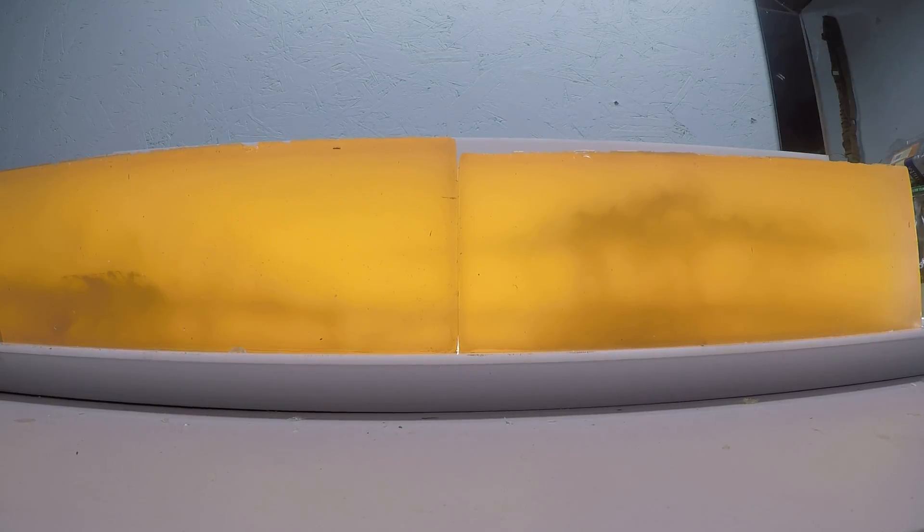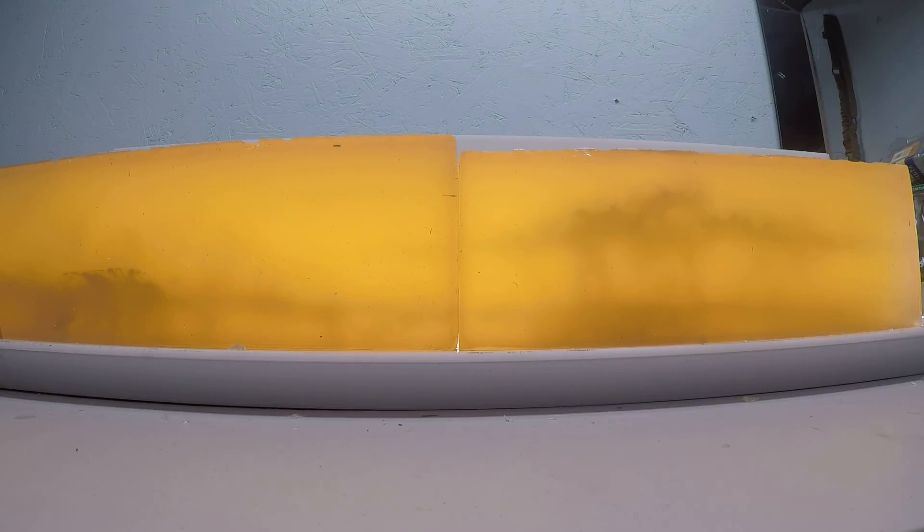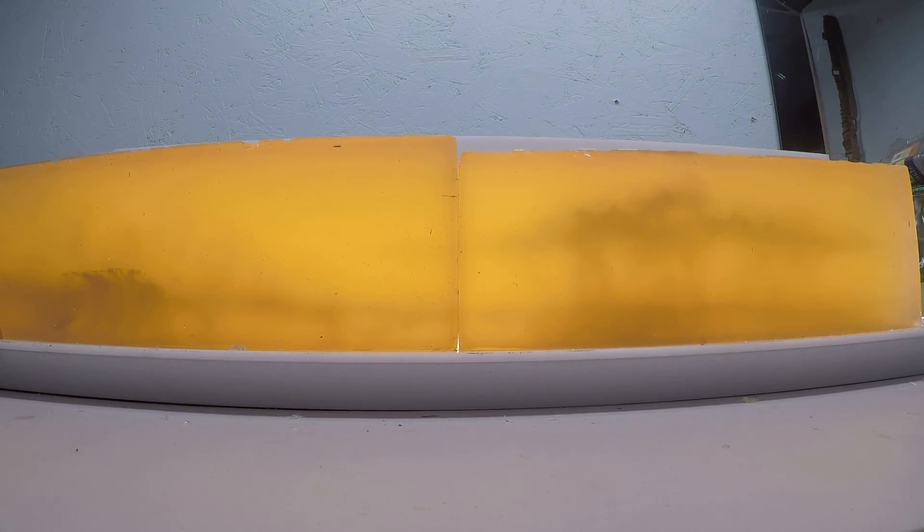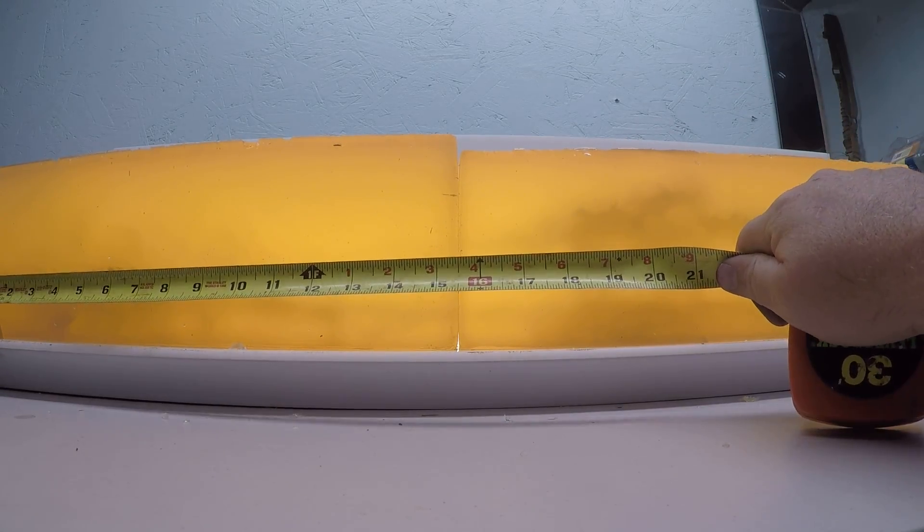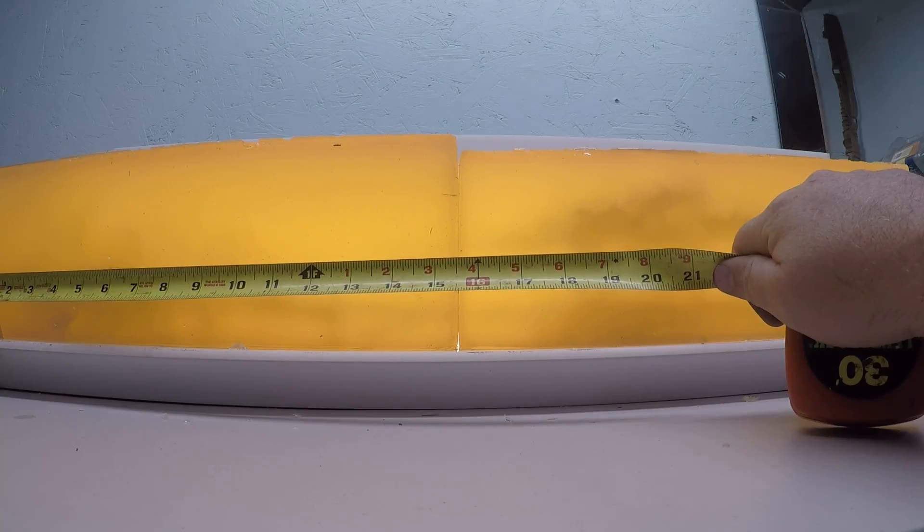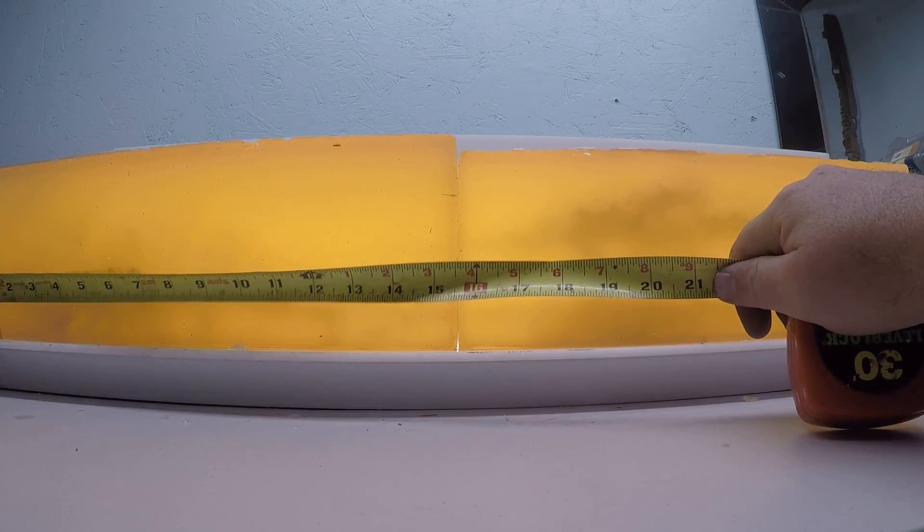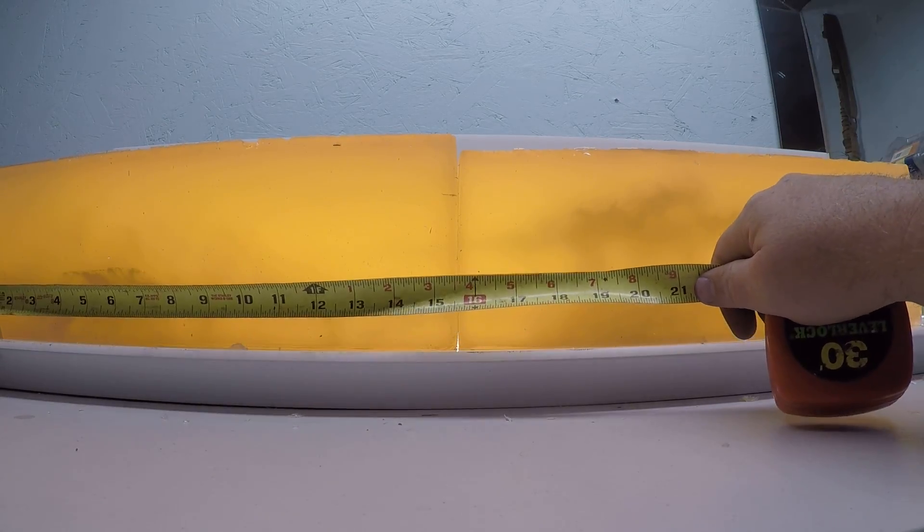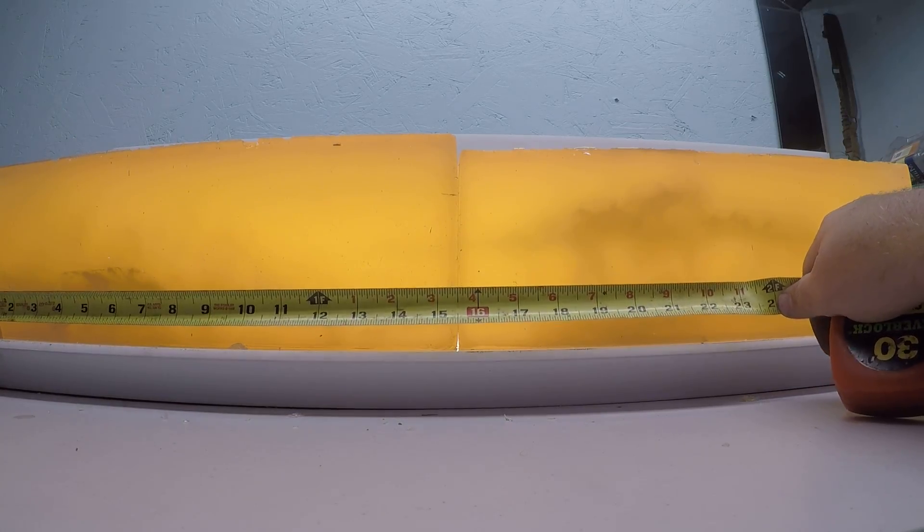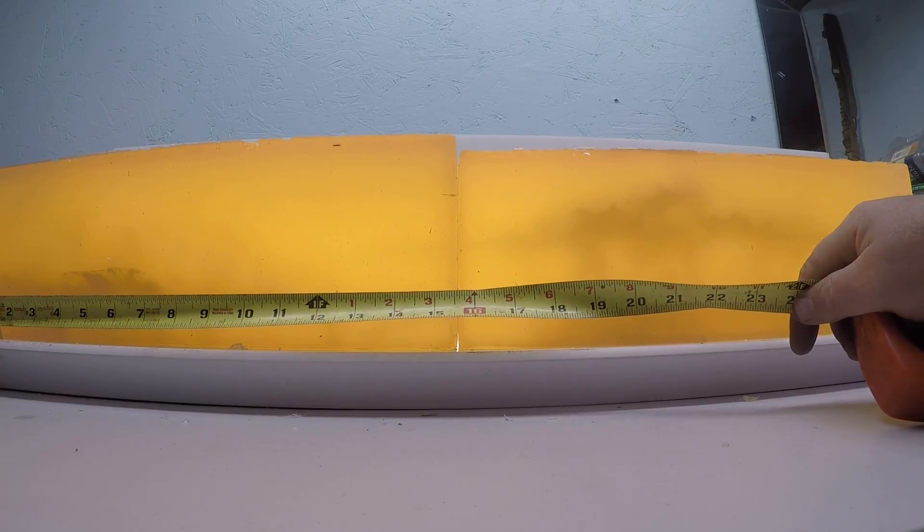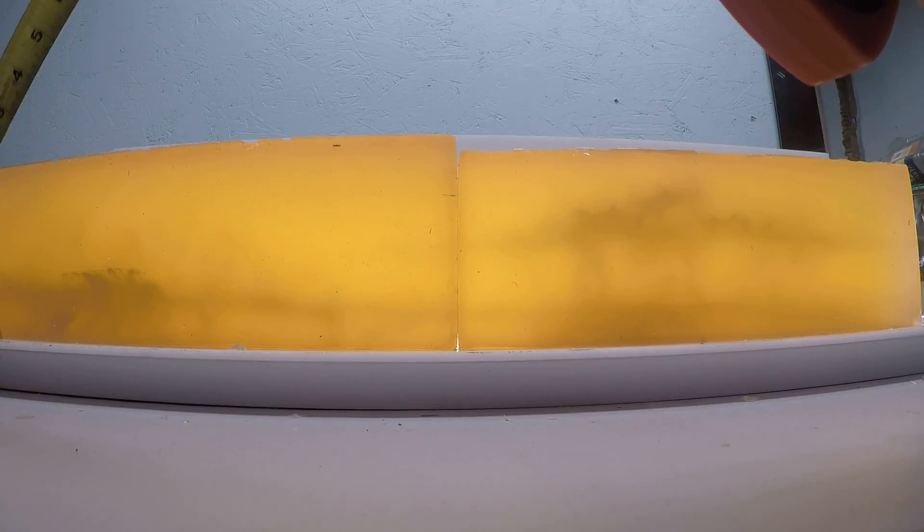On the left here we have left to right our high velocity load, and where it impacted the gel and started mushrooming was three quarters of an inch in. You have that massive permanent wound channel running from the inch and a half mark to the 11 and a half inch mark, with the permanent wound channel carrying that roughly one inch diameter to almost a 16 inch mark.